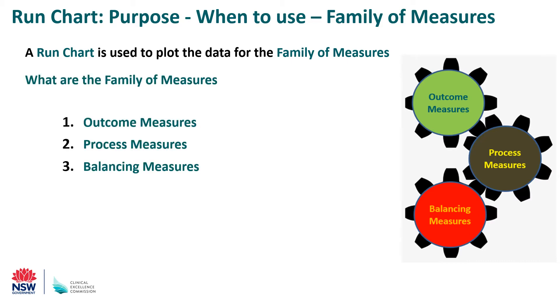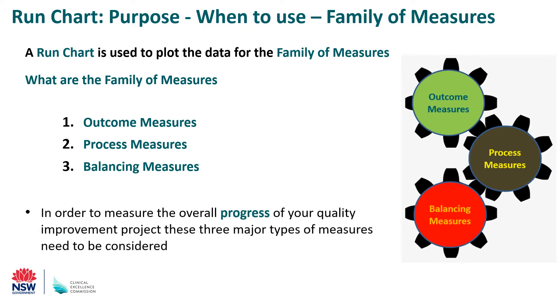So what are the family of measures? They are outcome measures, process measures, and balancing measures. In order to measure the overall progress of your quality improvement project, these three major types of measures need to be considered.